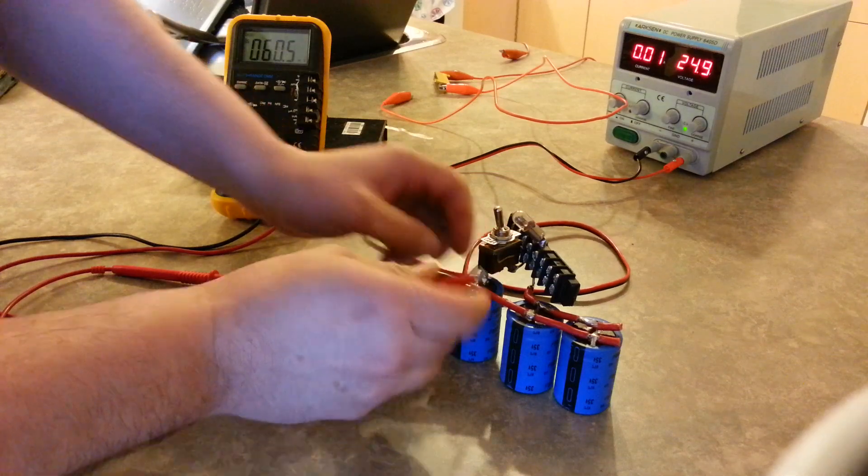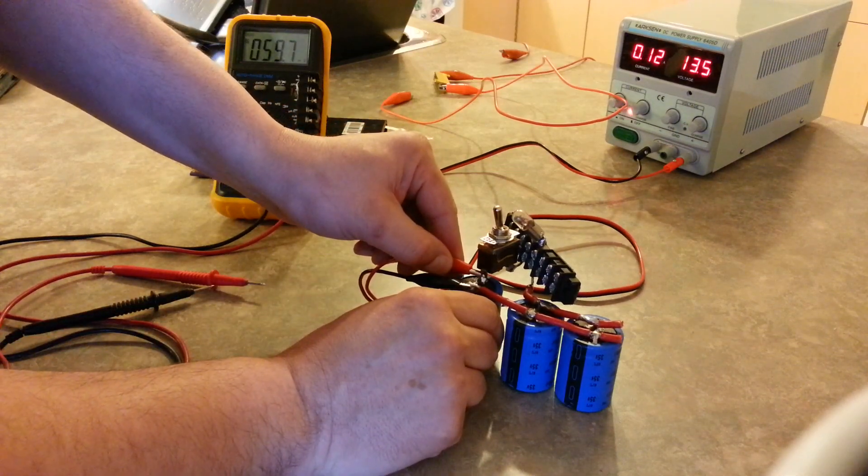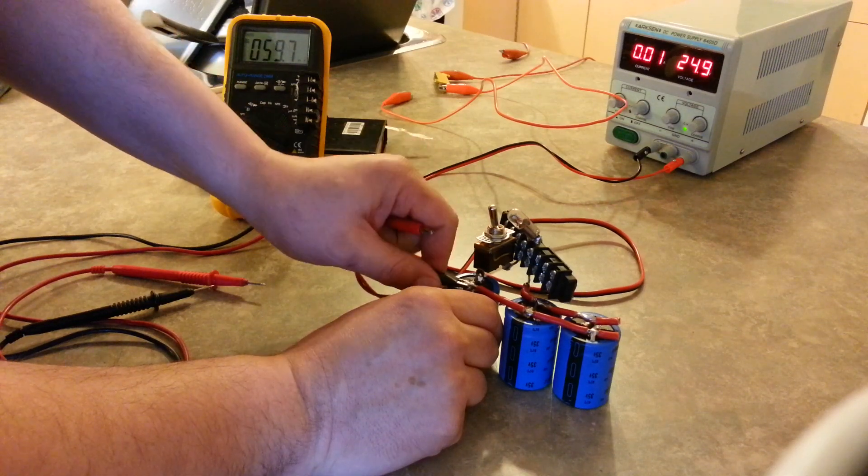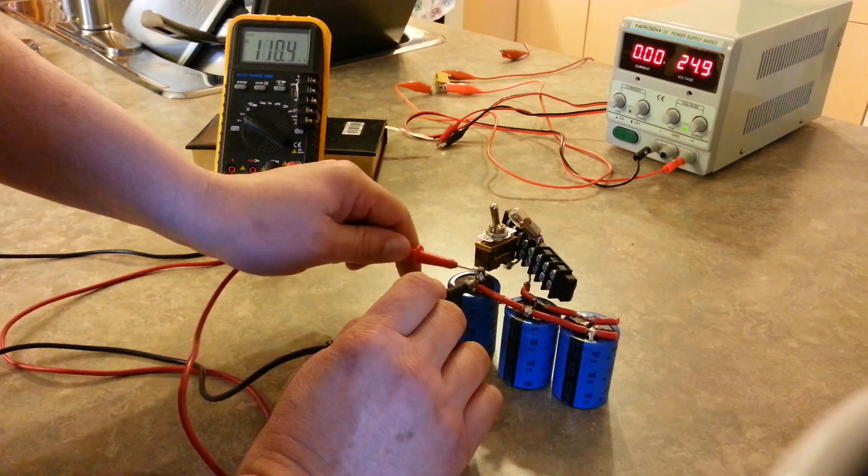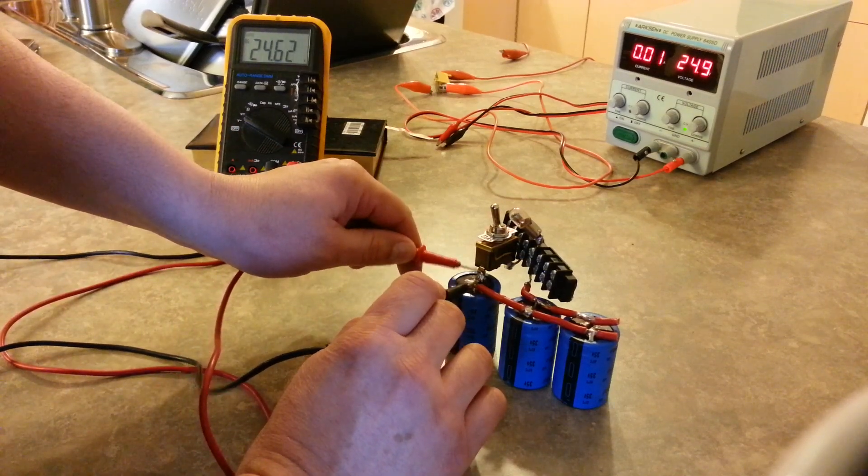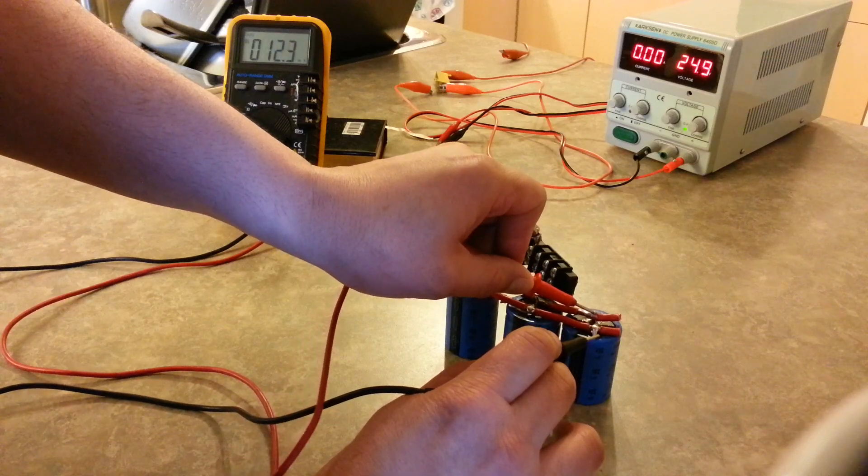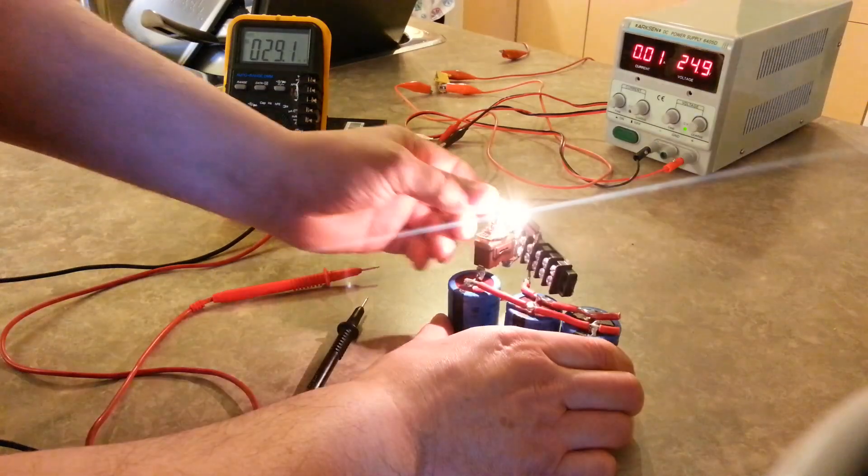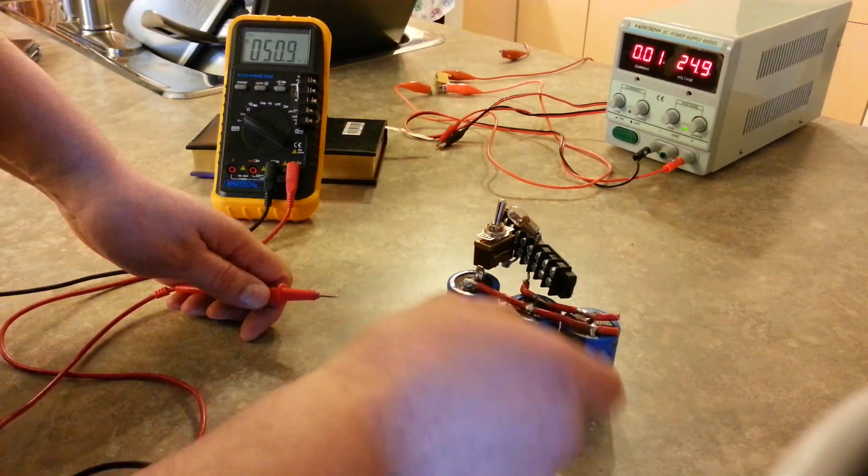This capacitor - these ones are disconnected - we'll charge it to 25 volts. Okay, move that, take a measurement. 24.62, nothing there, nothing there. And we'll discharge it across the light bulb, across this load. It's just basically a loop, right?